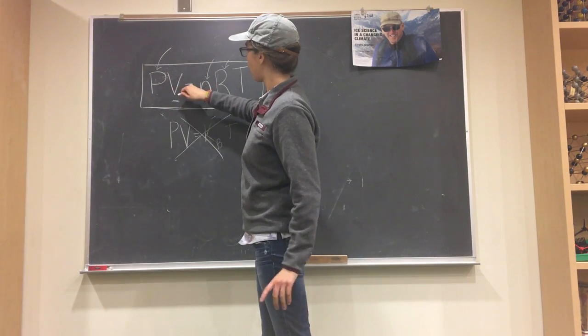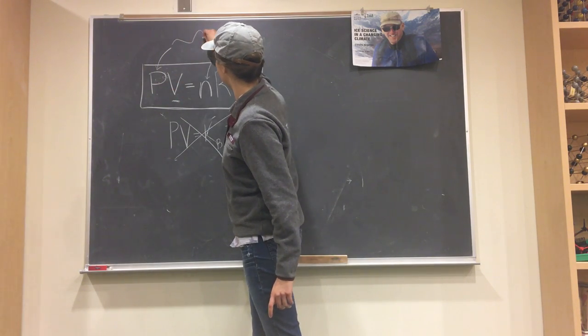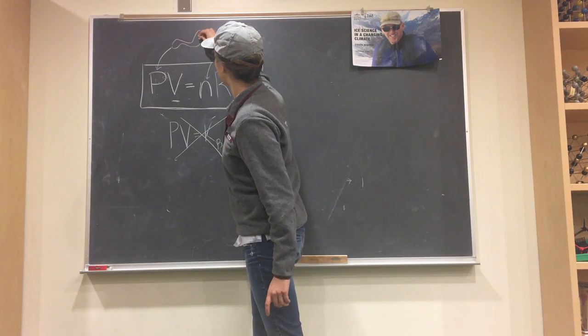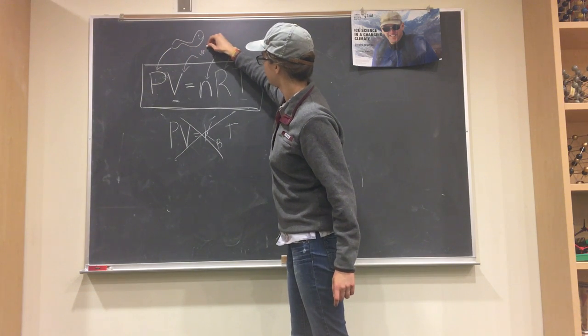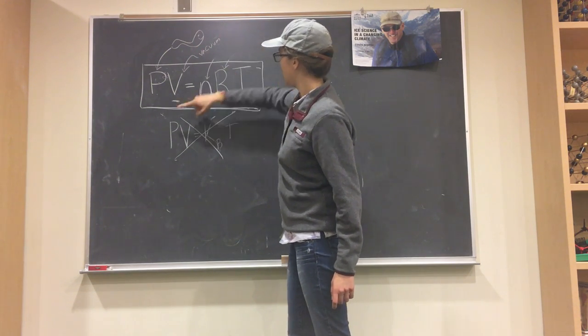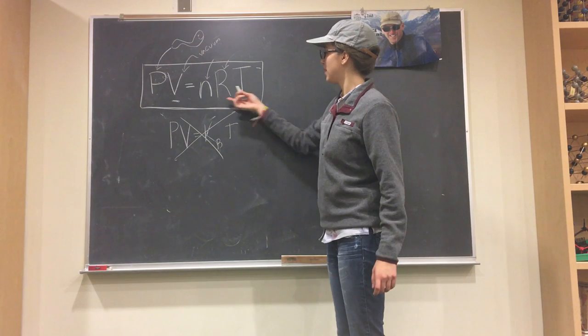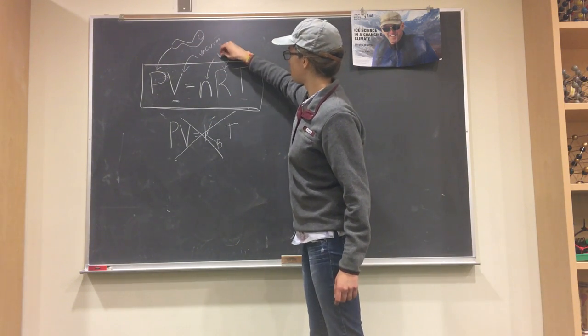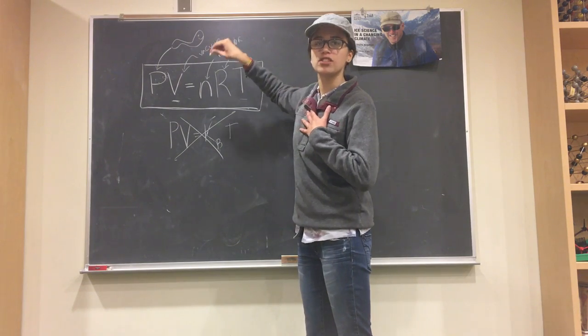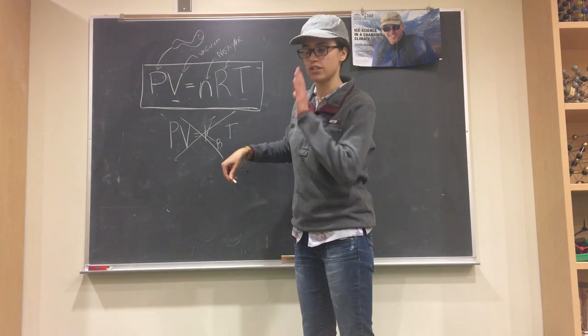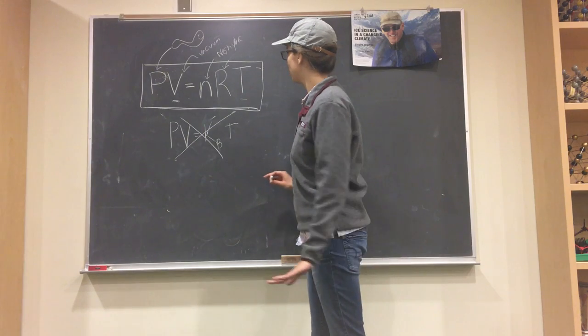P stands for the number of pythons in your system. There's a python. V is the vacuum. And this side of the equation is equivalent to the Nesheva constant, named after myself, which is equivalent to 105, otherwise known as the number of subscribers on my YouTube videos.